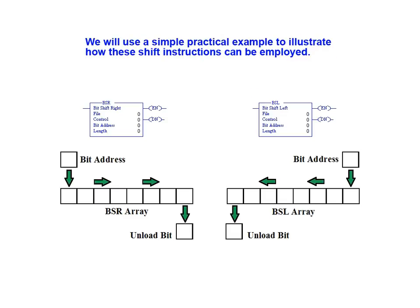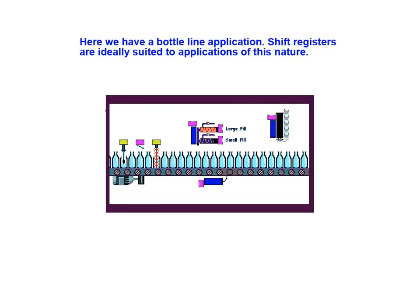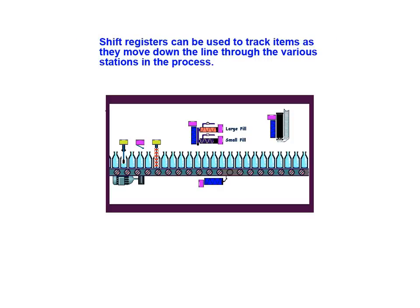We will use a simple practical example to illustrate how these shift instructions can be employed. Here we have a bottle line application. Shift registers are ideally suited to applications of this nature. Shift registers can be used to track items as they move down the line through the various stations in the process.